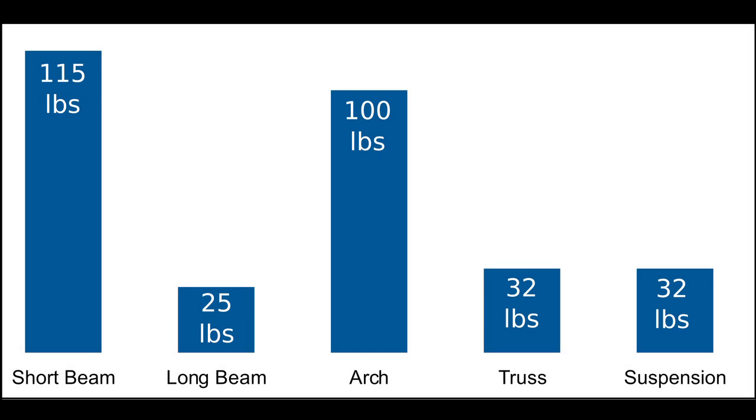The truss and suspension bridges were stronger than the long beam bridge, but weaker than the arch bridge. This may have been unexpected, but the real advantage of truss and suspension bridges are that they can span longer distances than beam and arch bridges.